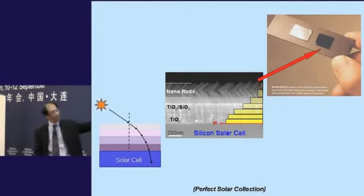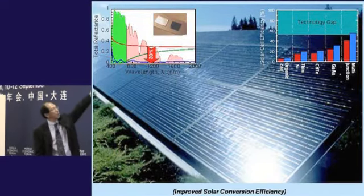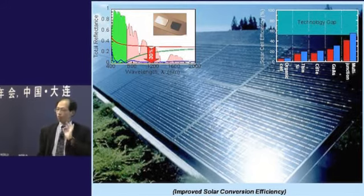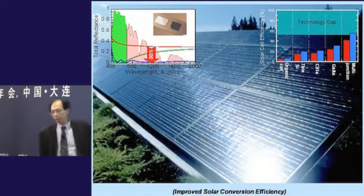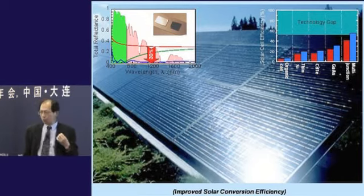This is one example. If we can eliminate all of those refractions, we can reduce the refraction by 30% and enhance the efficiency for all kinds of solar cells. And that goes all the way up to nearly 50%, the blue curve will show you. So that becomes a tremendous advantage of photonic engineering.